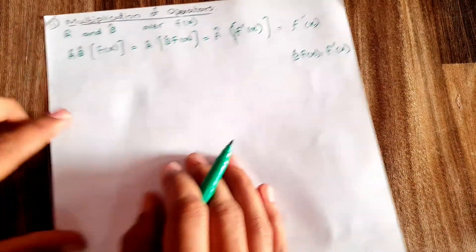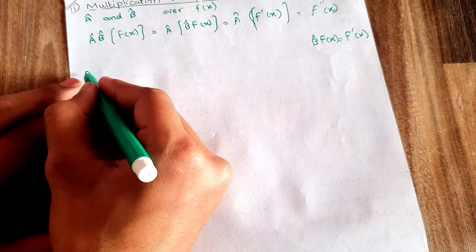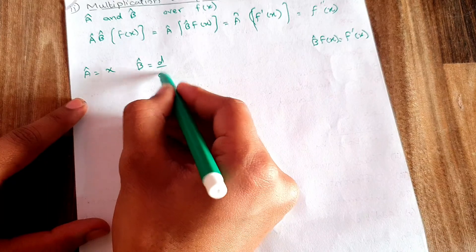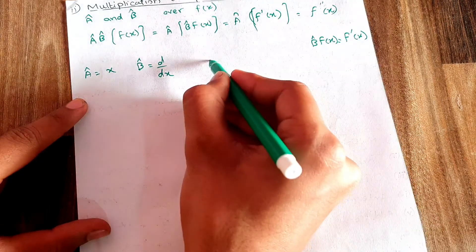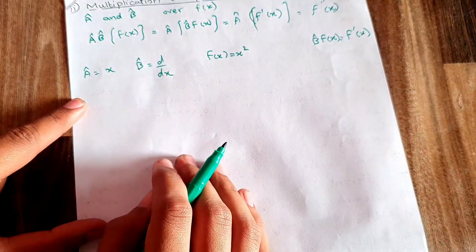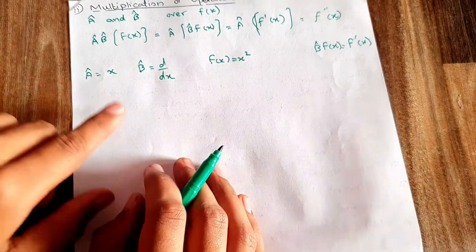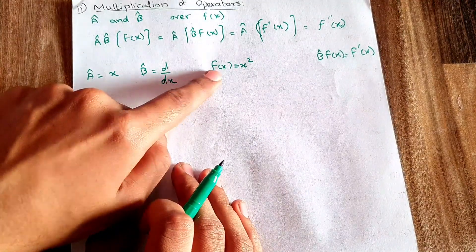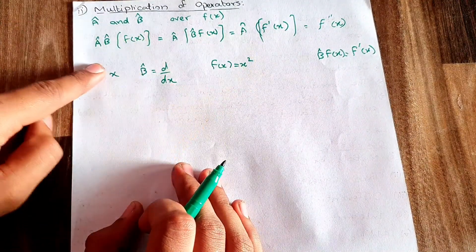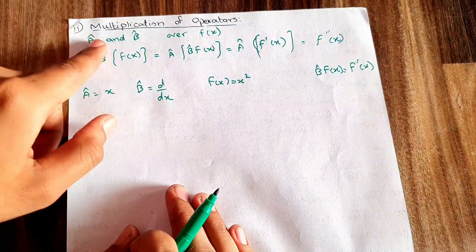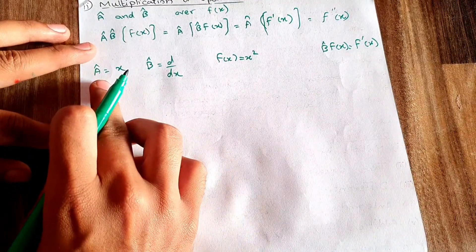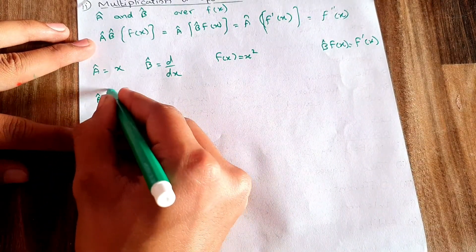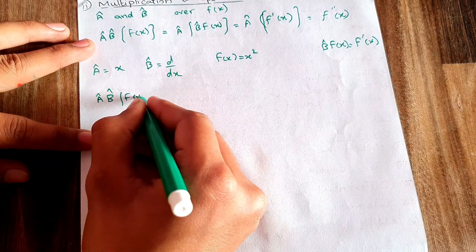Let's take an example: let operator A = x, operator B = d/dx, and function f(x) = x². This example is taken to teach the multiplication of operators. Using the formula A·B·f(x), I need to apply B on f(x) first.